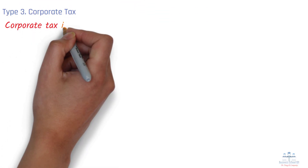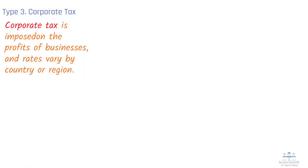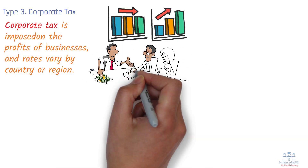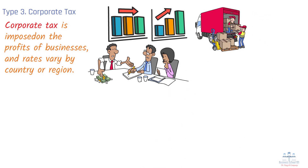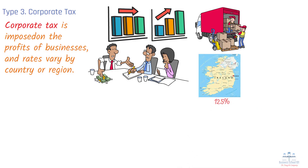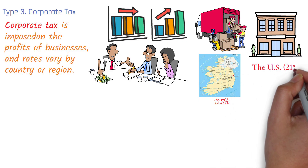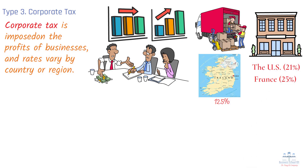Corporate tax is imposed on the profits of businesses, and rates vary by country or region. Corporate tax rates can be flat or progressive depending on the jurisdiction. Lower corporate tax rates often attract foreign investment, while higher rates can push companies to relocate or use tax havens. For example, Ireland's low corporate tax rate of 12.5% has attracted numerous multinational companies, while countries with higher rates like the U.S. at 21% or France at 25% must consider tax incentives or deductions to retain business competitiveness.